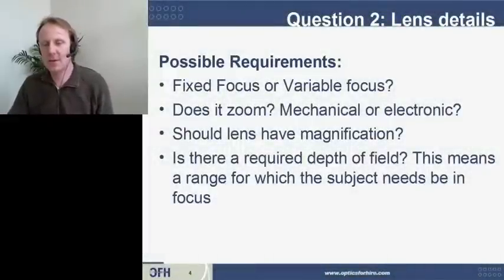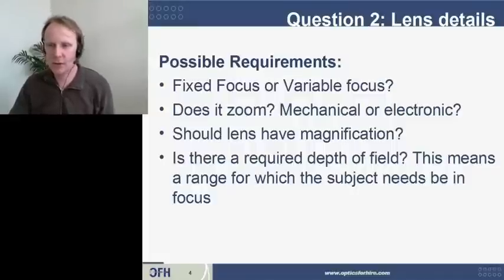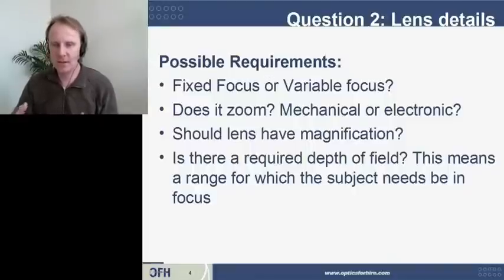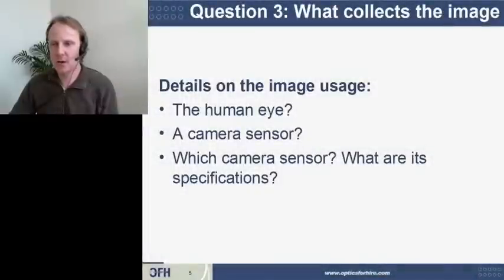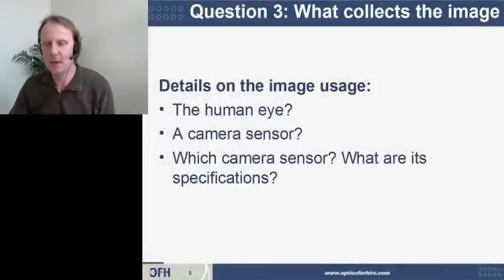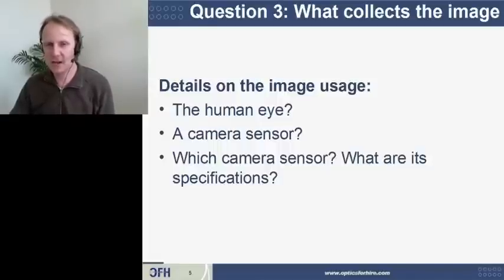Question two is some more details about the lens. Is this a lens that has fixed focus? Is the focus variable? Does the lens need to zoom? Is the zoom mechanical or electronic? Does the lens have magnification? When we're collecting the image, is there a depth of field within which you want objects to be in focus? The third question is: what is collecting the image? Is it the human eye? Is it a camera sensor? If it's a camera sensor, what are the requirements? Sensors can have different sizes, different pixel counts.